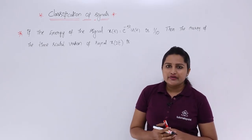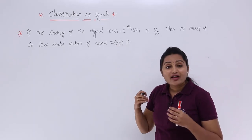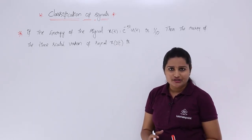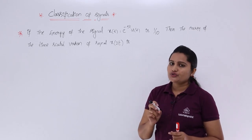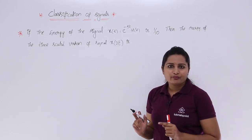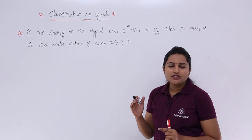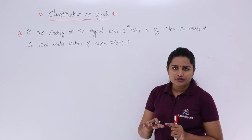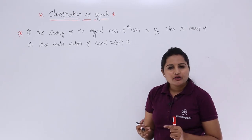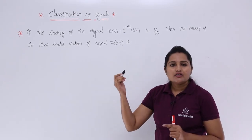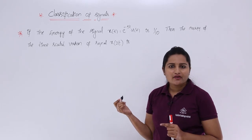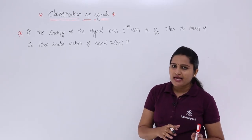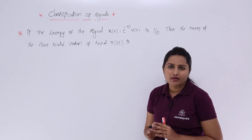Generally, what we will do is substitute — we require first of all the signal definition to calculate the energy. Because if you are going to calculate the energy, you have the formula: integral from -T to T of x²(t) dt, and you need to substitute into it. If it is infinite duration, you consider the limit T tending to infinity: minus T to T of x²(t) dt as the energy.